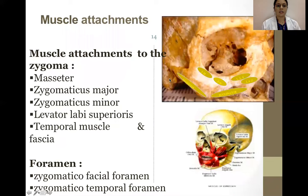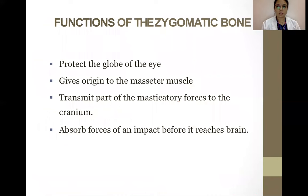The muscle attachments to the zygoma include the masseter, zygomaticus major, zygomaticus minor, levator labii superioris, temporal muscle and its fascia. The foramina are the zygomaticofacial foramen and the zygomaticotemporal foramen. Functions of the zygomatic bone include protection of the globe of the eye, giving origin to the masseter muscle, transmitting part of the masticatory forces to the cranium, and absorbing forces of an impact before they reach the brain.